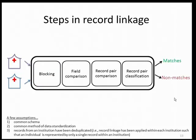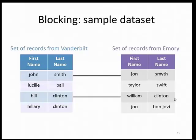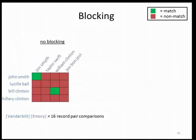Now if you peel the lid off the black box of record linkage, you see that several distinct steps happen in the process. I'll start with blocking — a method for reducing the computational complexity of record linkage. Using the data set we saw before, with records from Vanderbilt and Emory where lines denote record pairs that refer to the same individual: when doing record linkage, you compare each record at Vanderbilt to each record at Emory, resulting in four times four or sixteen record pair comparisons. Here, matches are shown in green and non-matches in red.